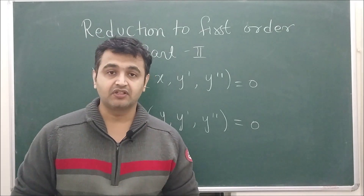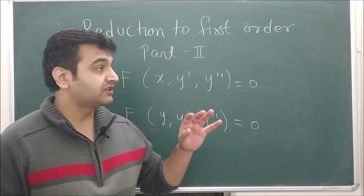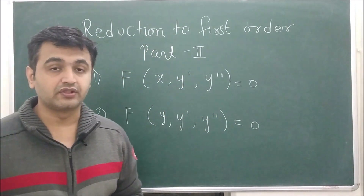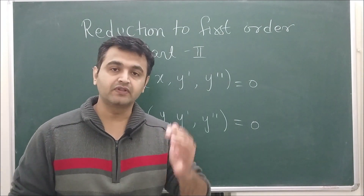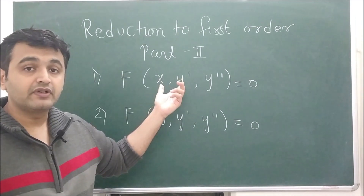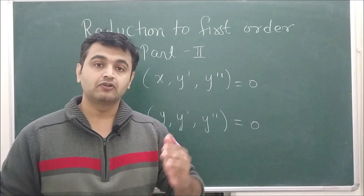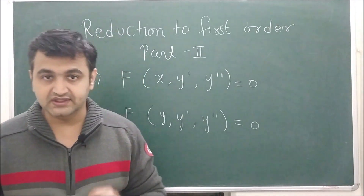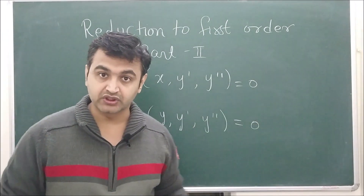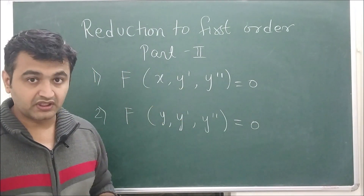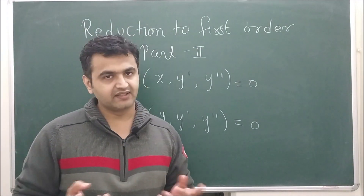Welcome to the 10th lecture on Ordinary Differential Equations. Today we are going to see Part 2 of the topic Reduction to First Order. In Part 1 we talked about how to find the solution of a second order linear homogeneous differential equation when one solution is given, and how to find another linearly independent solution using the formula derived in the last lecture.